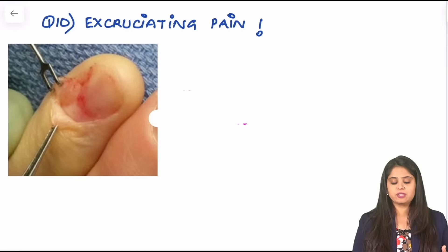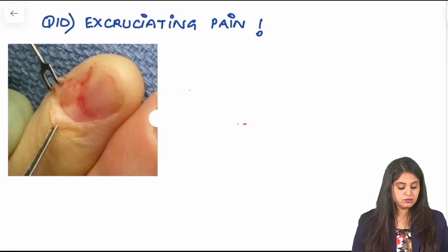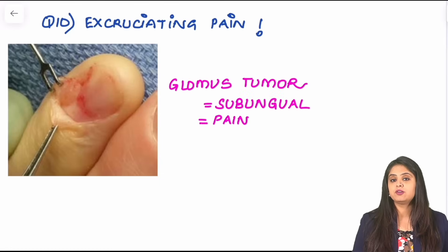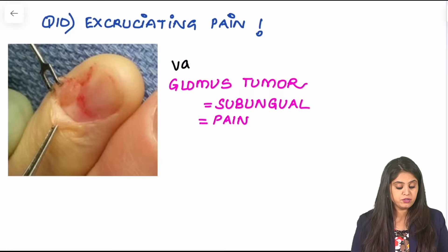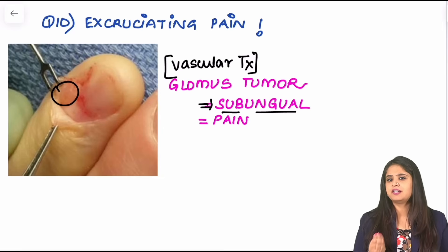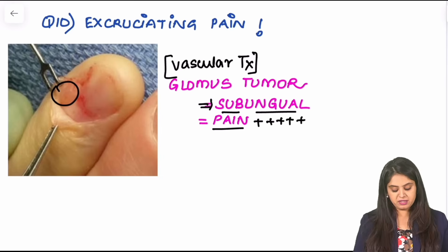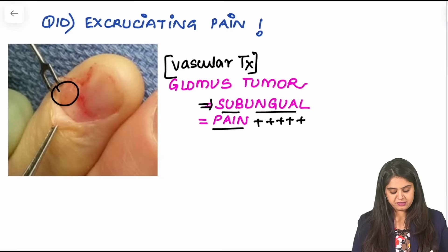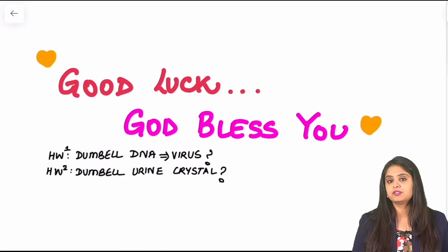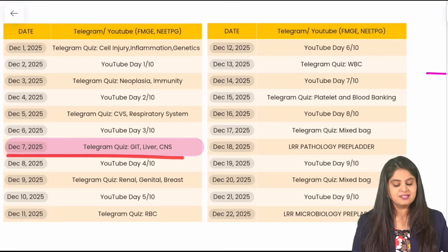The last image is actually a surgery question. The history is excruciating pain and there is something near the nail bed. With these two findings, think of a glomus tumor. A glomus tumor is a vascular blood vessel tumor. The two buzzwords: location is beneath the nail bed — a very tiny tumor, hardly a centimeter — but excruciatingly painful. That's a glomus tumor. With that we wrap up today's session. Please answer the two homework questions in the comments, and tomorrow we continue with the Telegram quiz.